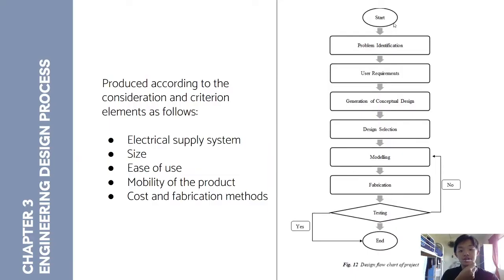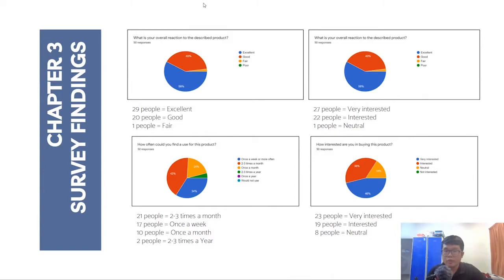Now I will explain the engineering design process. After our study, we concluded that the evaluation and generation of design concepts were produced according to criteria such as electrical supply system, size, ease of use, mobility of the products, cost, and fabrication methods. The design flowchart begins with identifying problems in the market and determining user requirements, then sketching designs that address those requirements and selecting a final design. We then model and fabricate it, test the model, and if it does not function well, remodel and refabricate. To collect user requirements, a questionnaire was created via Google Form and shared with friends, families, and the public, providing ideas for the product design process.